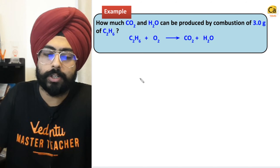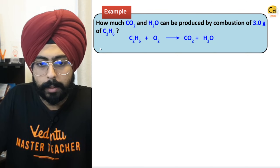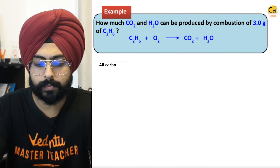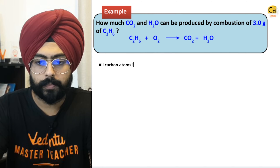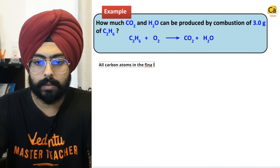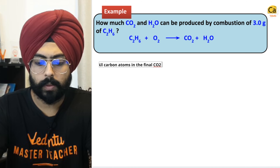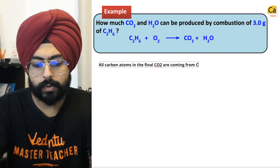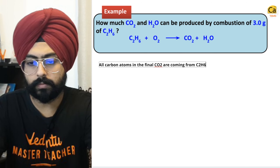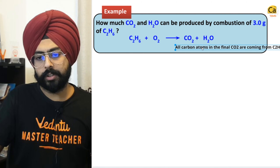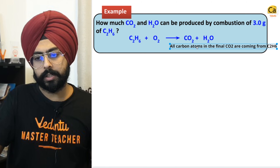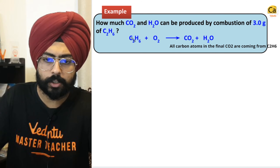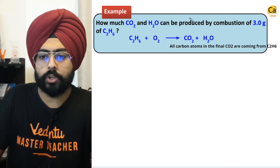I'll give you a statement — please tell me whether it makes sense or not: All carbon atoms in the final CO2 are coming from C2H6. There is no other place. When you burn C2H6, all this carbon will get converted into CO2.